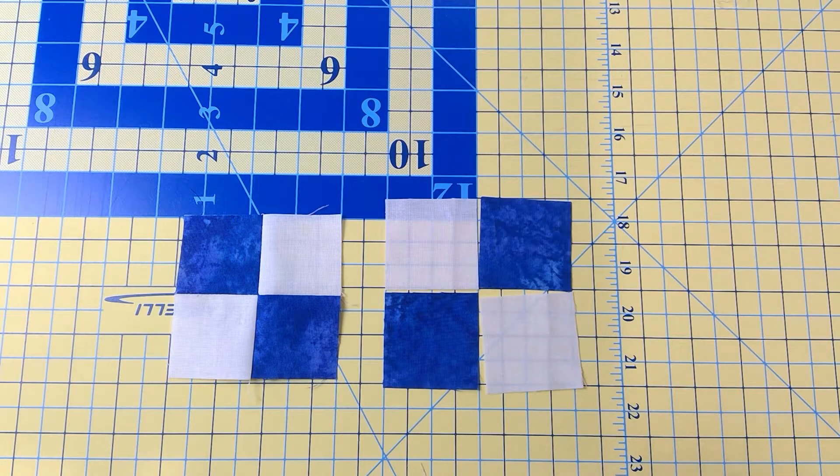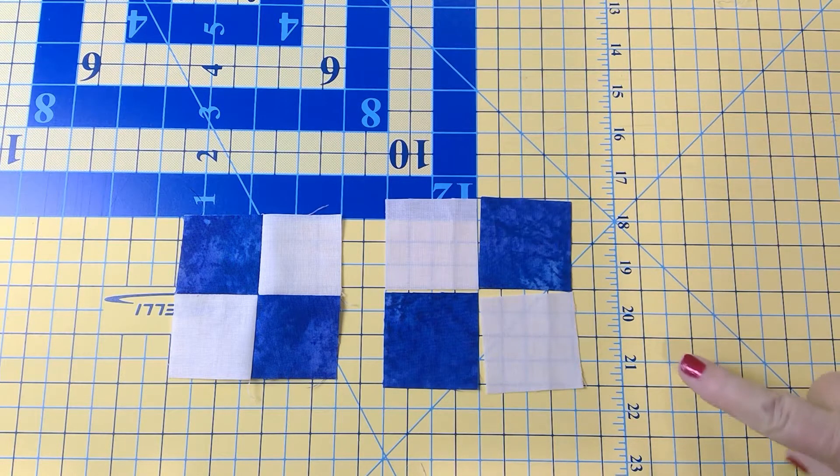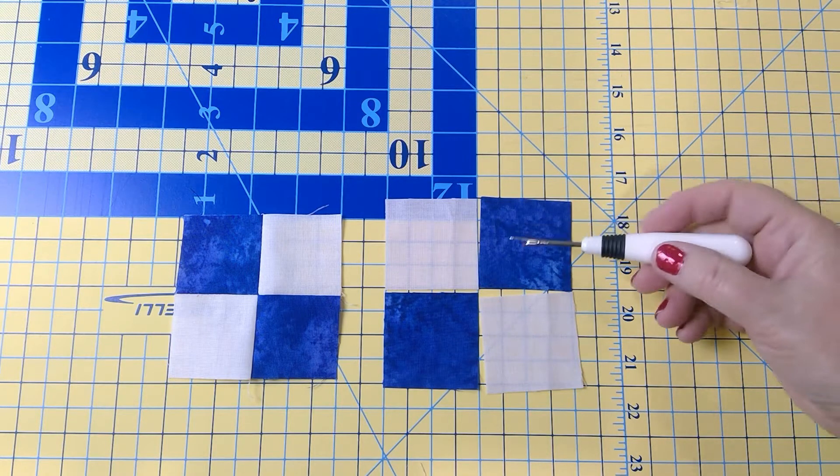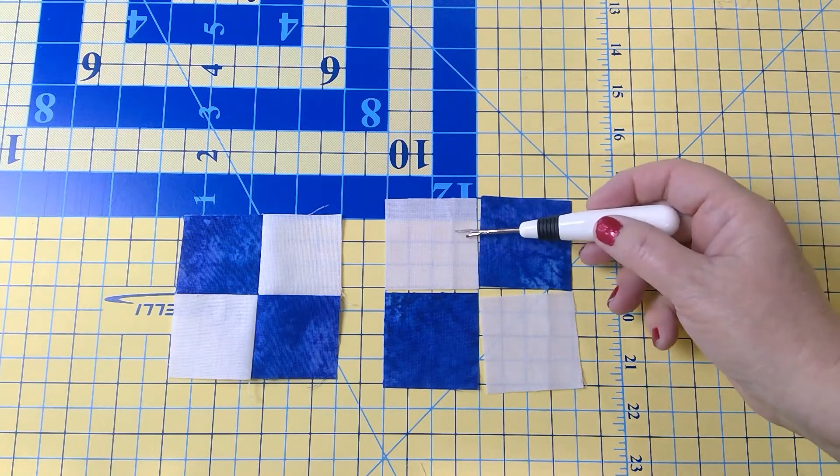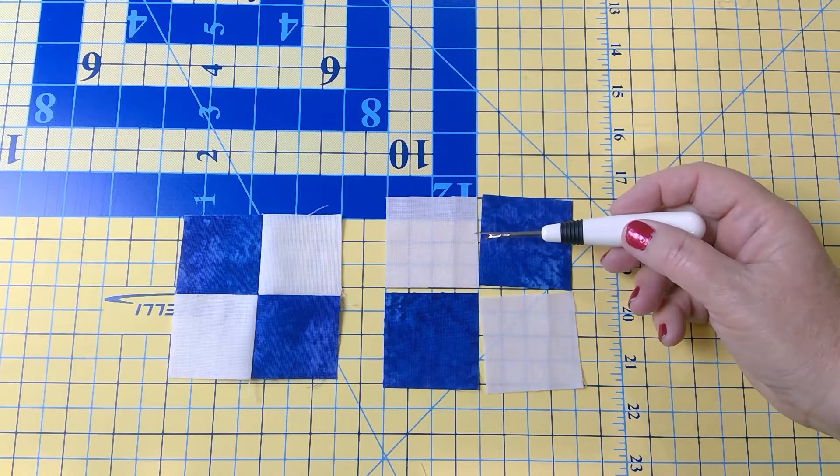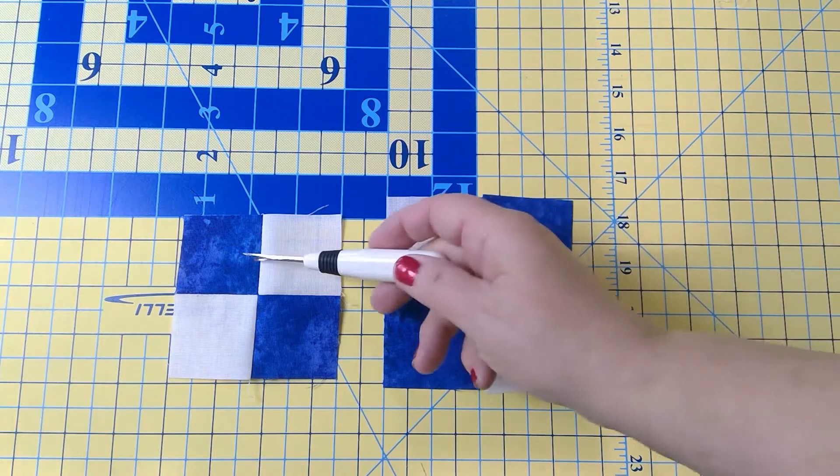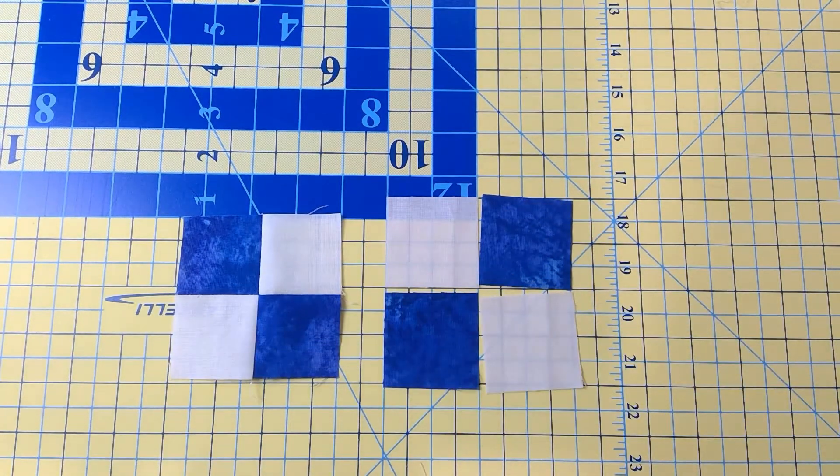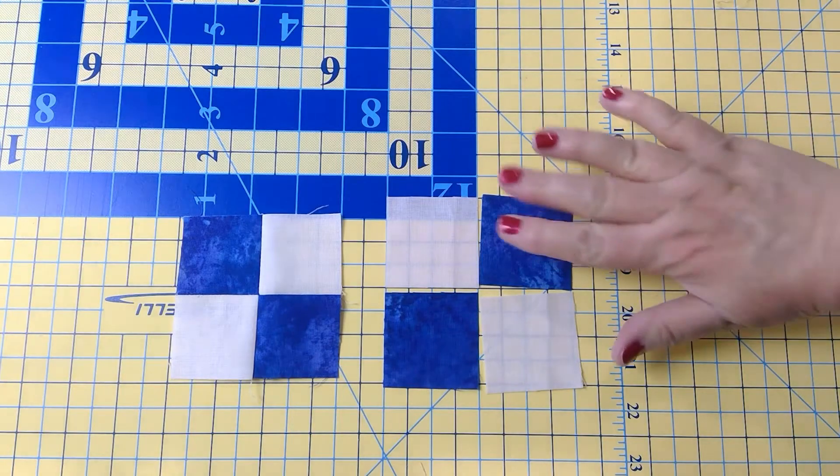Our first step is we're going to make a four patch. So you're going to take your squares and join your dark to your lights. You're going to make one, two, three, four sets of them.